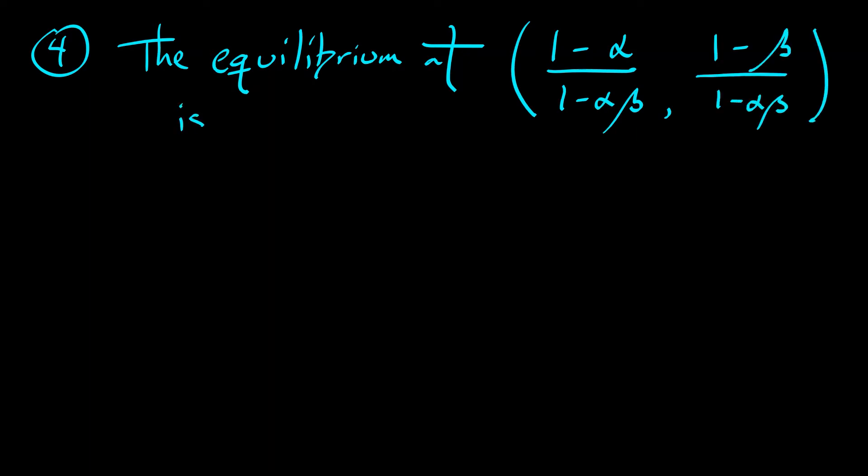The fourth equilibrium we haven't talked about yet. That equilibrium that is located where x equals 1 minus alpha over 1 minus alpha times beta, and y equals 1 minus beta over 1 minus alpha times beta. That's an interesting equilibrium.